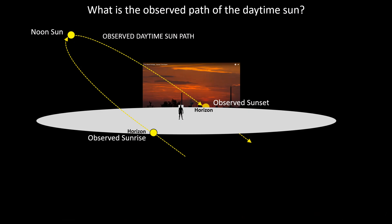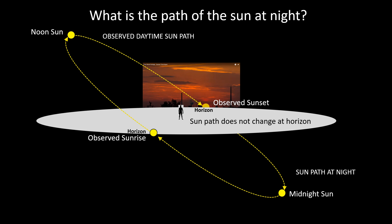And with the addition of the observed sunrise in the noon Sun we can get a very good idea of what the daytime Sun path is. And since that Sun path is not going to change direction at the horizon, this shows us that at night that Sun goes below the visible surface of the Earth, which of course would not be possible on a flat Earth.